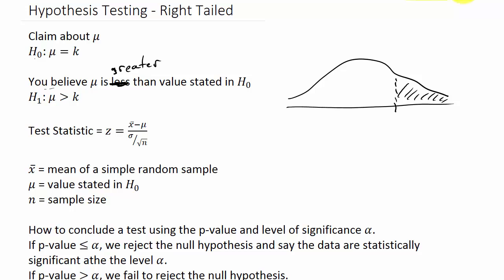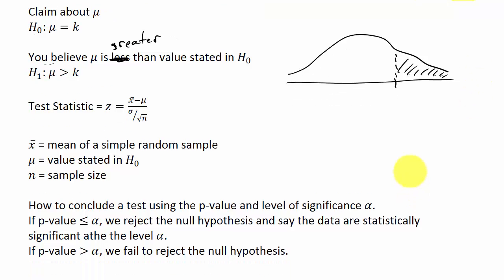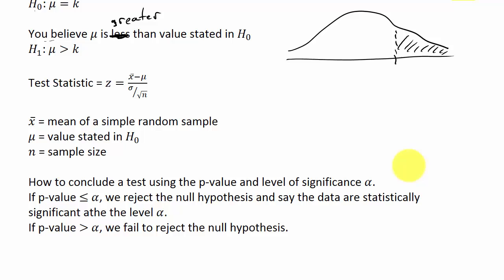Mu is the value stated in the null hypothesis H naught, and n is the sample size. To conclude the test using a p-value and level of significance alpha, if the p-value is less than or equal to alpha, we reject the null hypothesis and say the data are statistically significant at that level alpha.